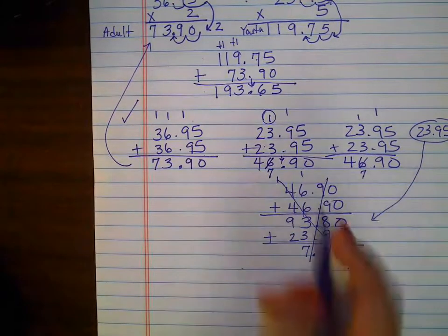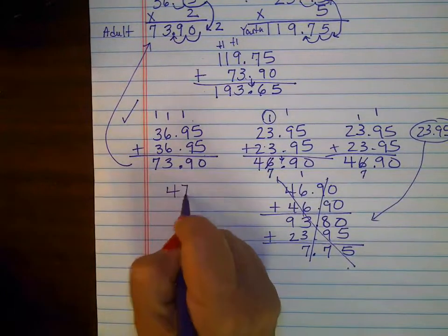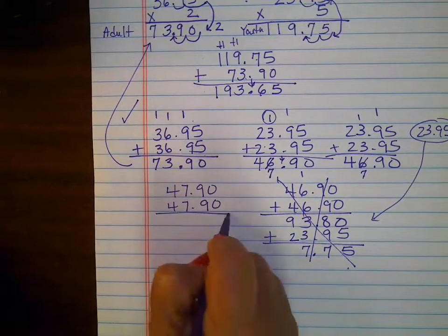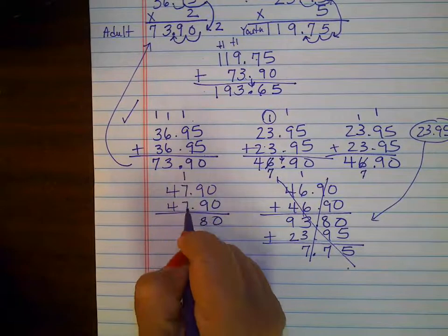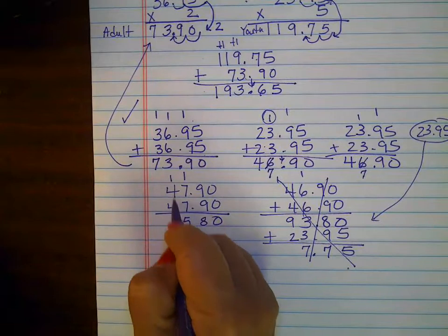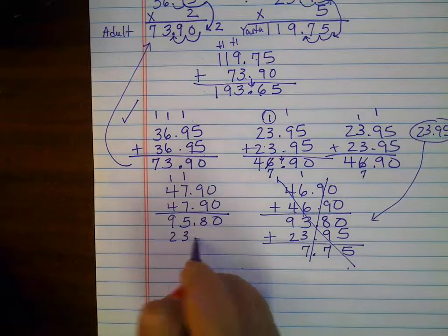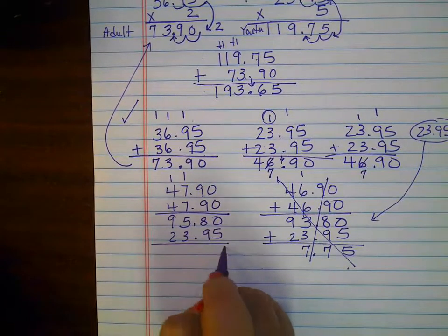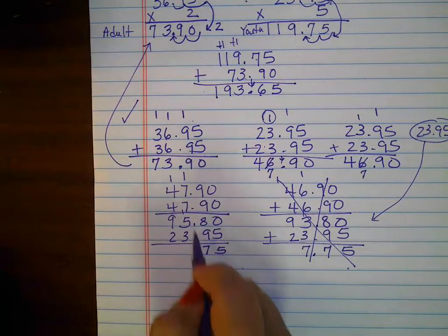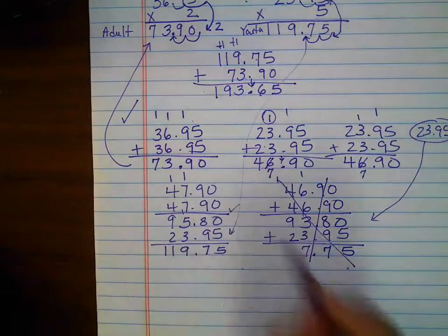7 plus 7 is 14 plus 1 is 15. And I have 8 plus 1 is 9. Now I'm going to add in my $23.95. So I have 5, and this is 5, 6, 7, 8, and 9. So then I have this that checks out. So we're good.